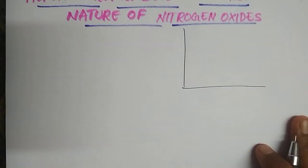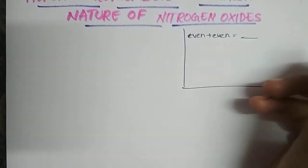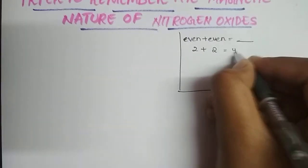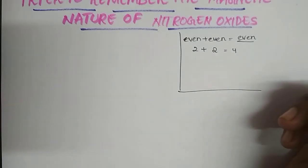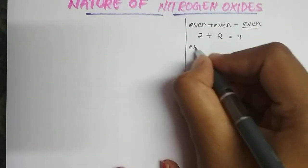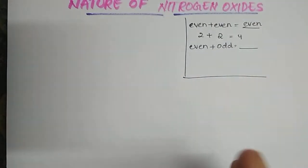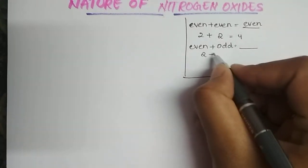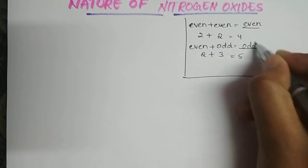For example, when we add even number plus even number — let's take 2+2 — we get 4, which is even. So even plus even gives even. Now, even plus odd: let's take 2+3, we get 5, which is odd. So even plus odd gives odd.